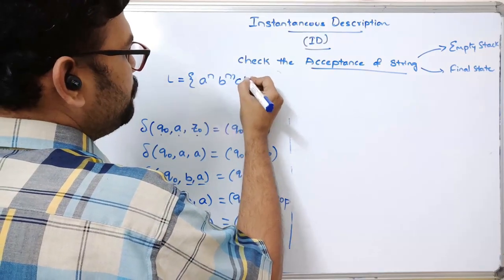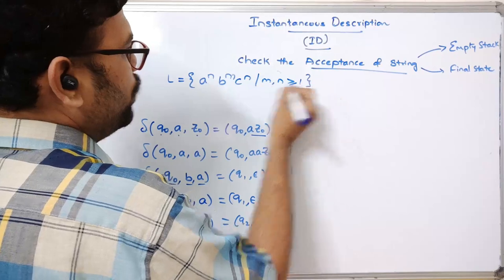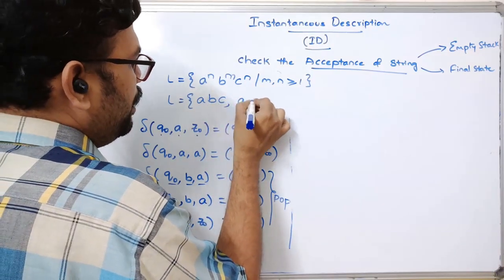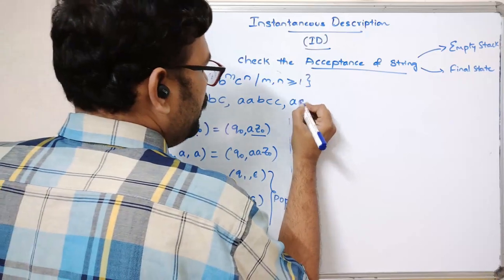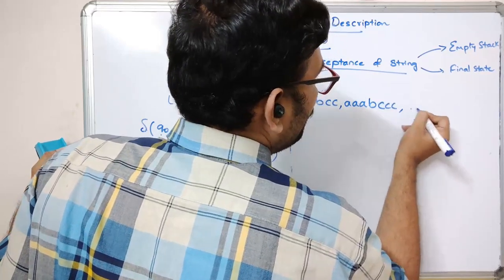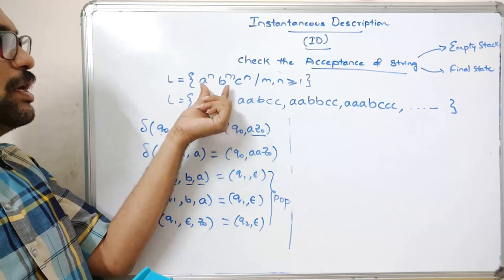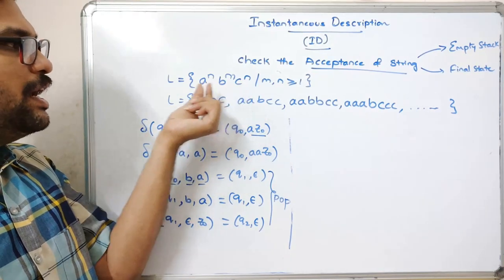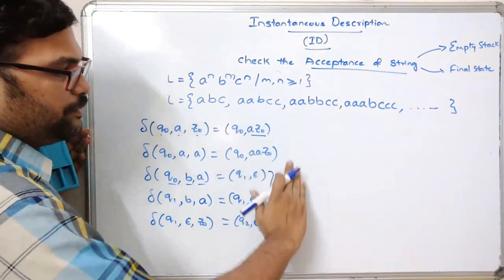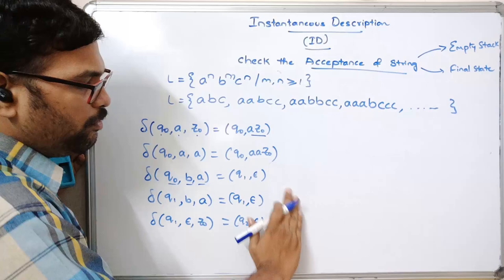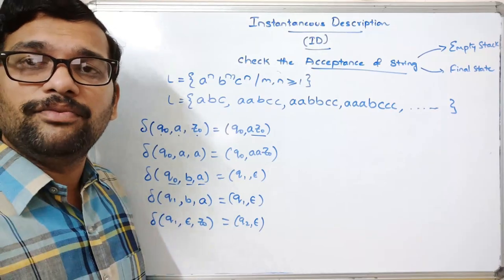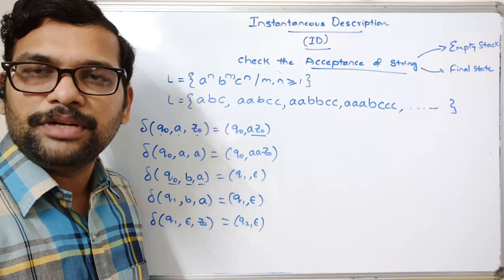Now the second language: L = a^n b^m c^n where m, n ≥ 1. The strings are: abc, abcc, aabcc, aaabccc, aaabbbccc, and so on — the number of a's and c's are equal. These are the possible strings for this language, and we have already constructed the transition functions in the previous session.